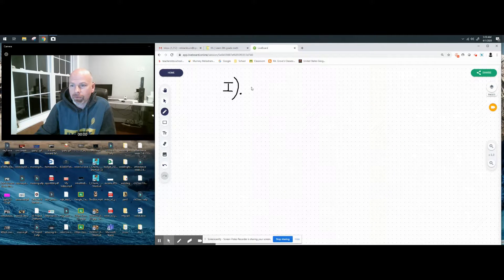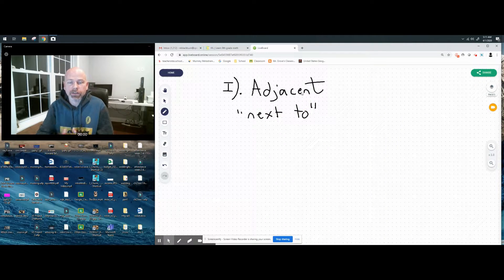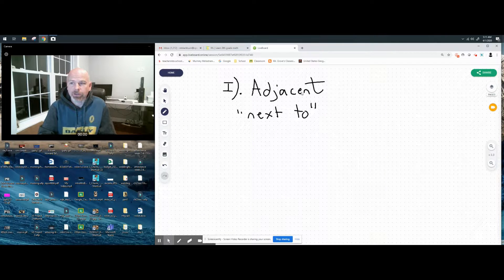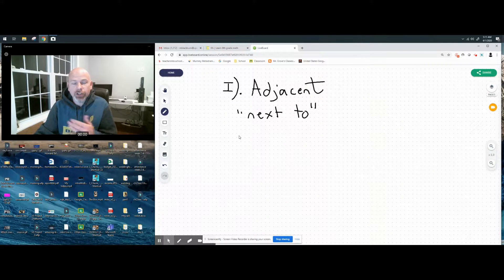First, we have this type of angle. You've heard of this: adjacent. Adjacent means next to. You live adjacent to your neighbor, you live next to your neighbor.